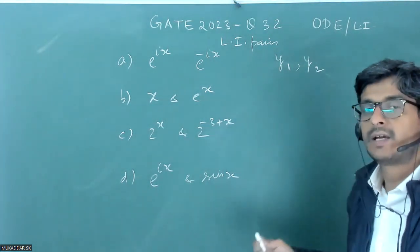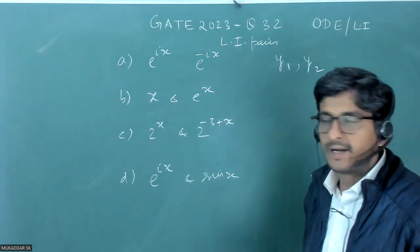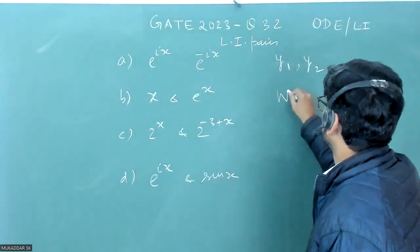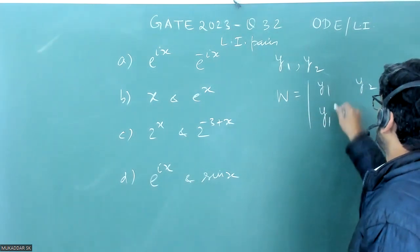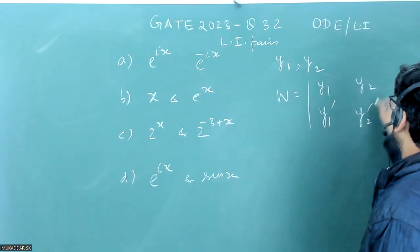So how to check if the solutions are linearly independent and dependent. We can use the concept of Wronskian which is given by y1 y2 and y1 dash y2 dash.